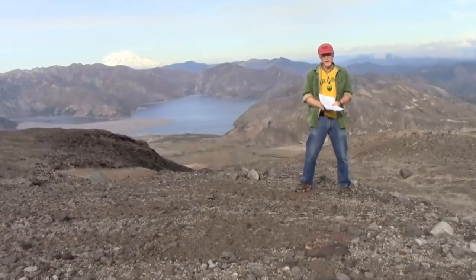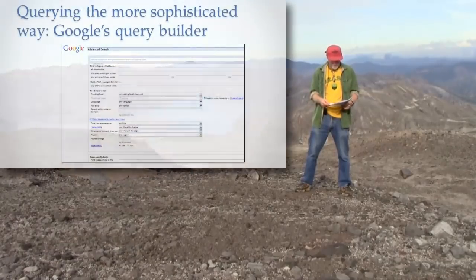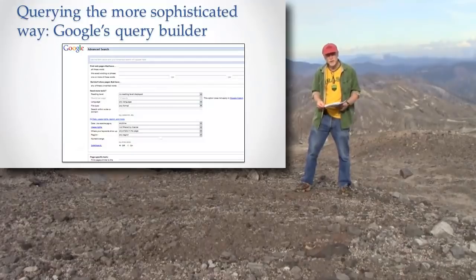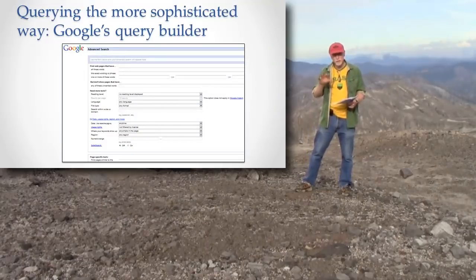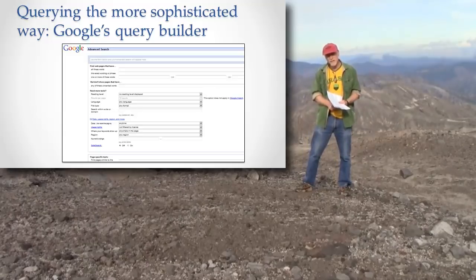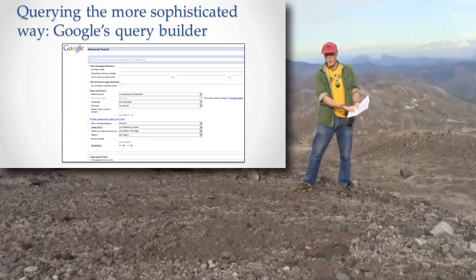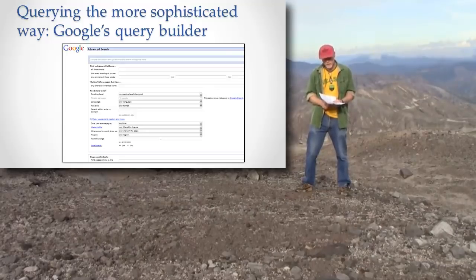I'm as lazy as everybody else — I don't do Google power searches nearly as much as I could — but when I do, I always get much better results. So let's start with this thing called the Google Query Builder. It's under Advanced Search. If you go to the Google page and look carefully, you'll see a little link that says Advanced Search. If you click that link, you'll go to a page where instead of having a single box, you have a whole page full of options to format your query.